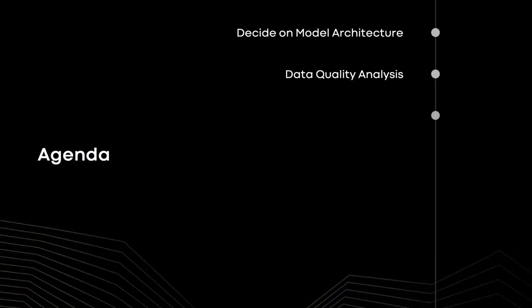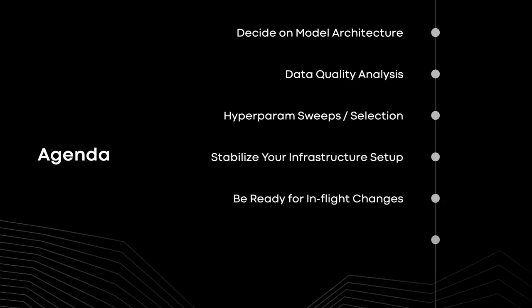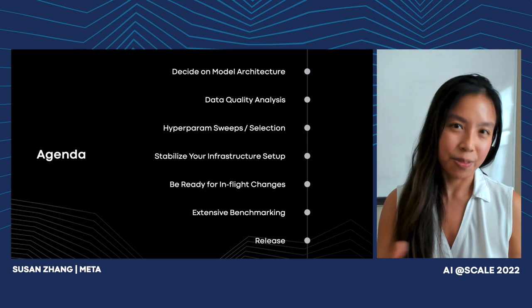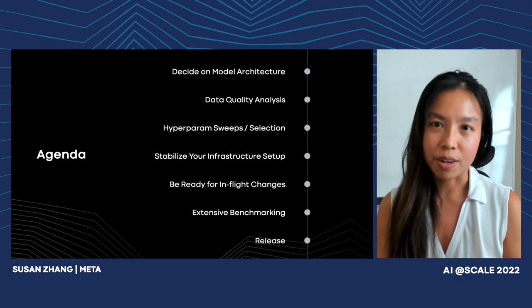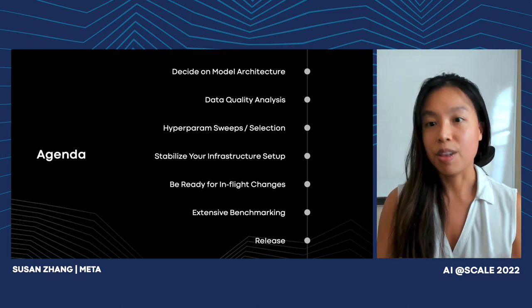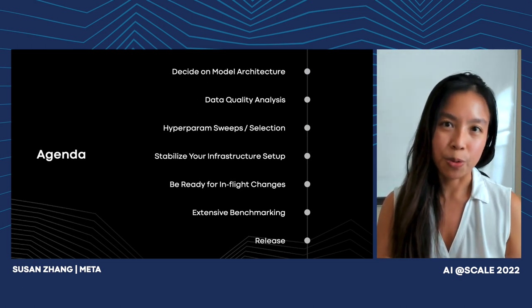The flow of this talk will follow the lifecycle of most ML AI pipelines — we have to figure out the data, do a bunch of hyperparameter sweeps, and so on. But there will be a few differences, mainly around how few hyperparameter sweeps we can afford to do at scale, which is effectively none, and also the changes we had to make while we were training the model.